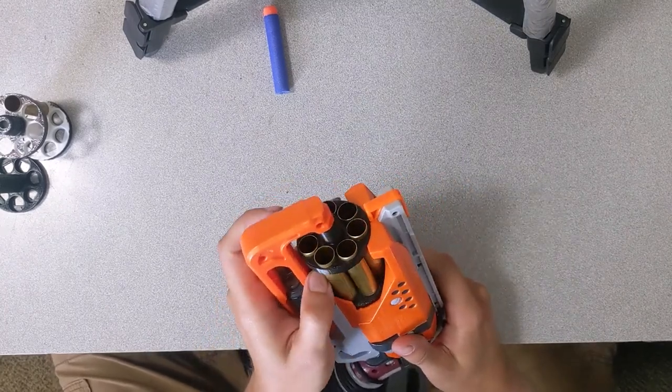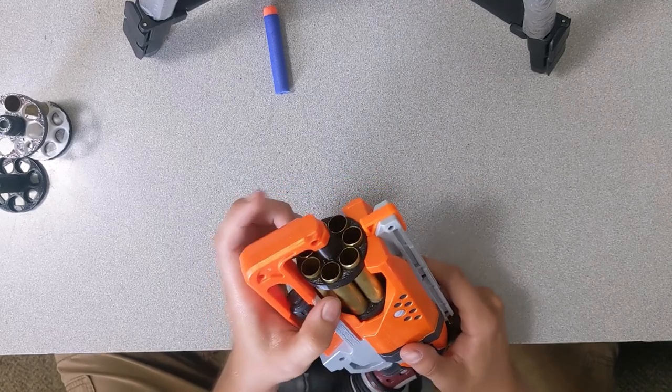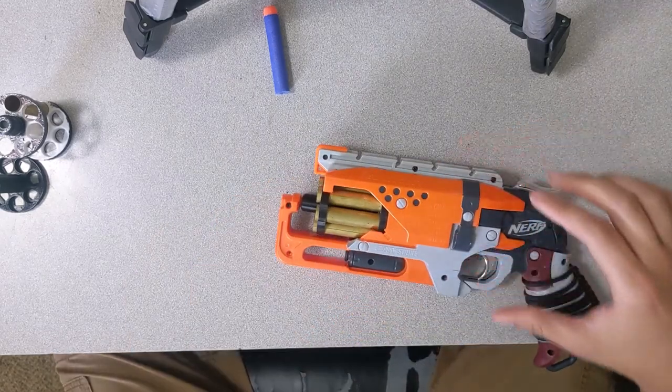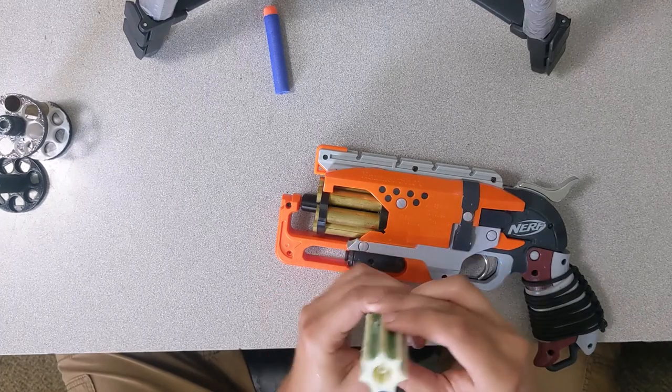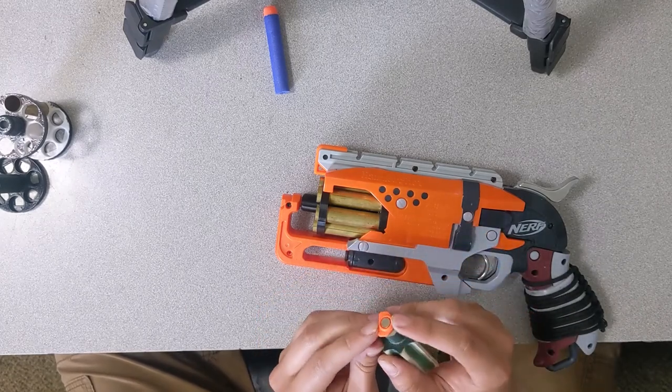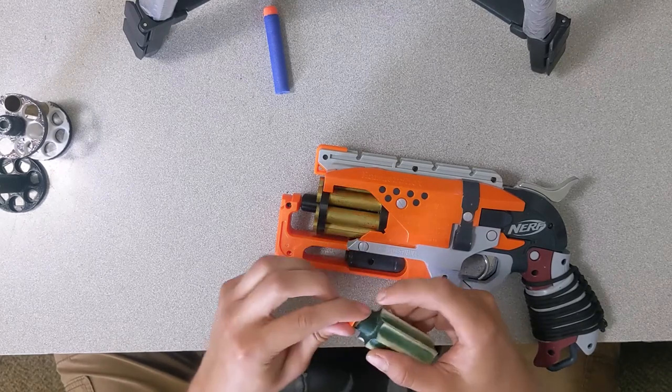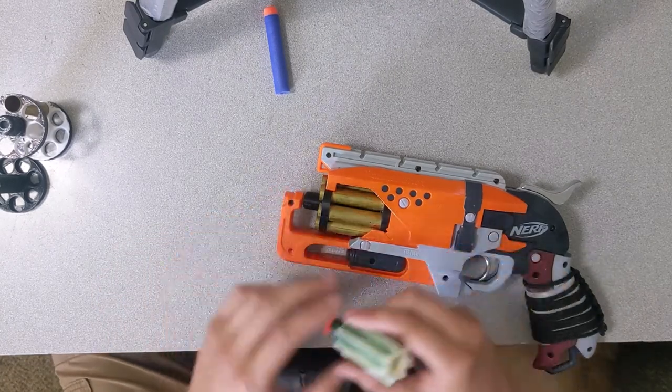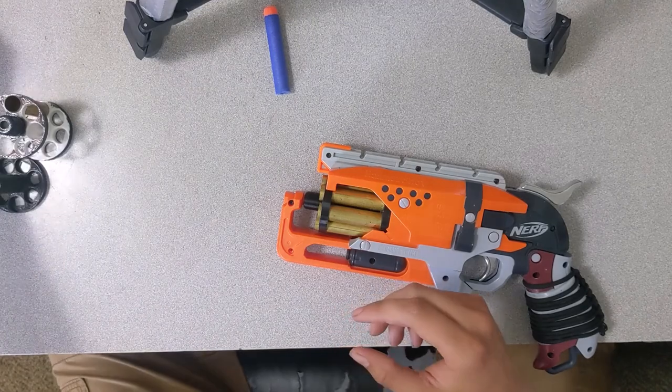It actually utilizes the original hardware out of the blaster to seat against. That was another thing I wanted to do, is I wanted to be able to take this orange piece and utilize it in there, as well as utilize the part that seats in the back end of the cam mechanism inside the blaster itself.